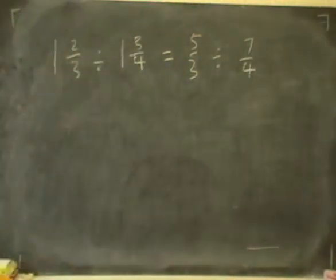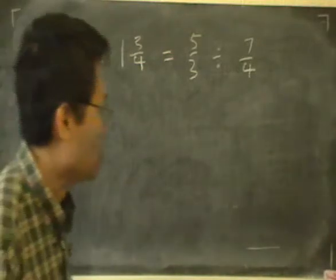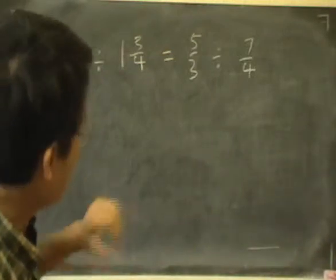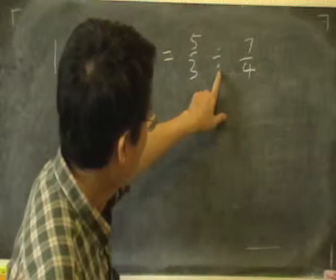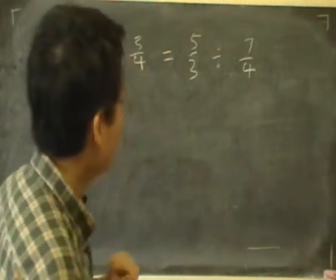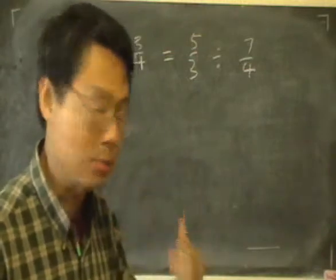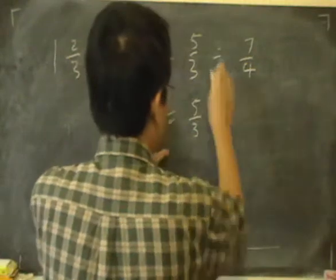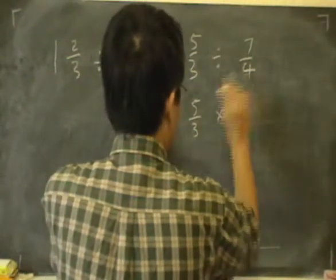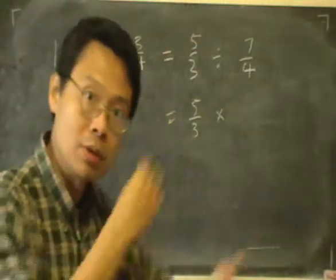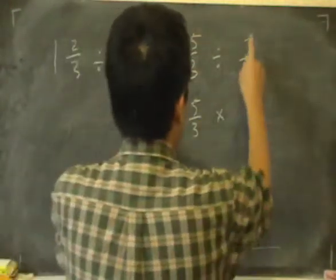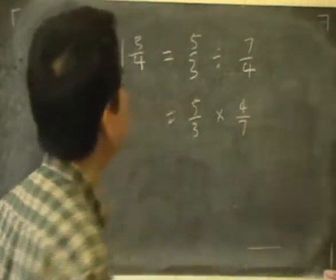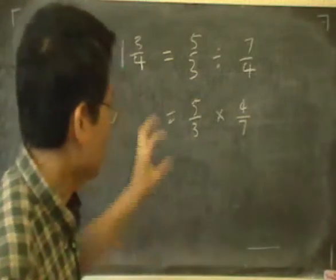Once we have done that, we can multiply or divide them directly. In this case, if we have to divide by this fraction, the next step would be change the divide into a times. But if we change the divide into a times, we must change the fraction after it by making it upside down. So 7 over 4 must become 4 over 7.